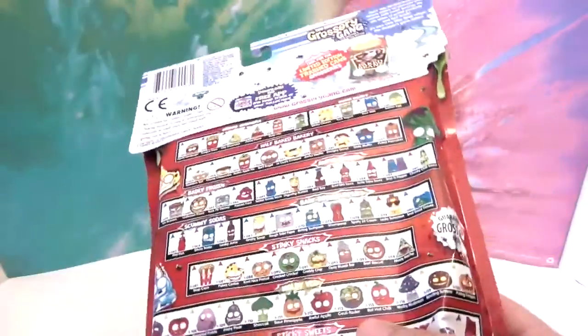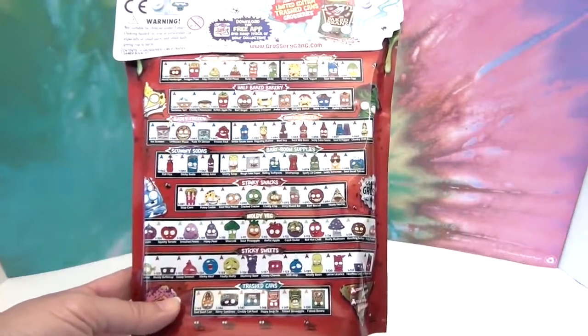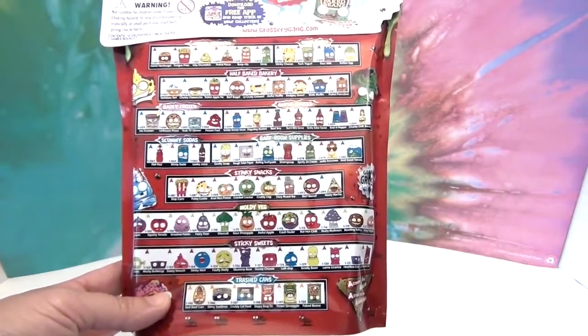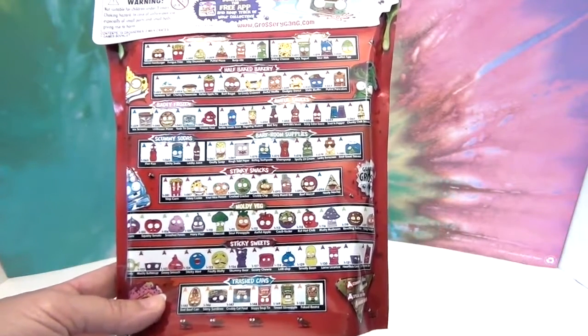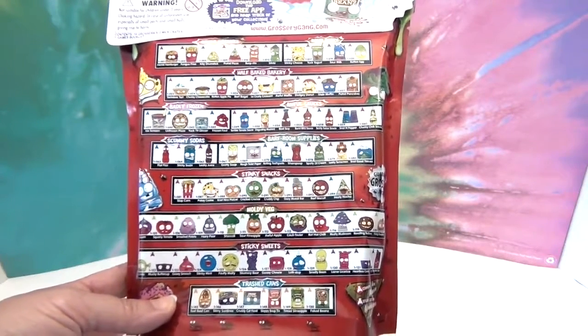And look at this, it even gives you some little bit of the checklist here on the back so you can see. We have gotten a moldy veg and it's awesome, so it'll be cool to get a sticky sweet.